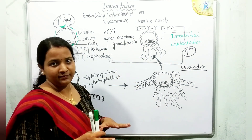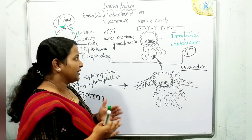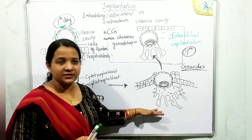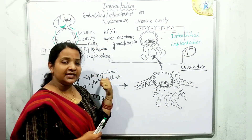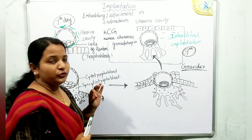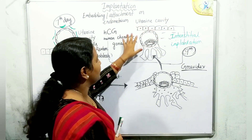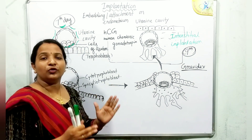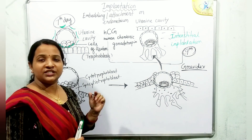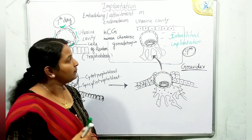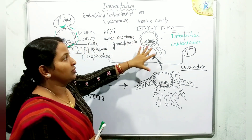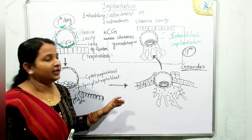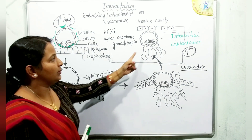hCG is the indicator hormone of pregnancy. Its main function is to stimulate the corpus luteum, present inside the ovary, to produce more and more progesterone. This progesterone maintains the thickness of the uterine endometrium and provides nourishment to the growing embryo. Later we will discuss the growth of the embryo under gastrulation.